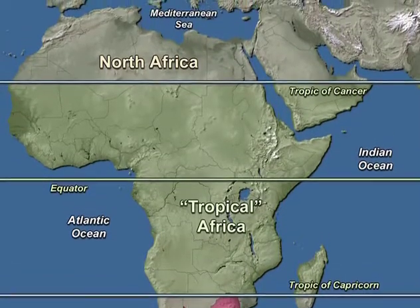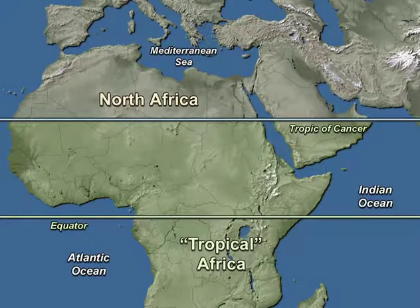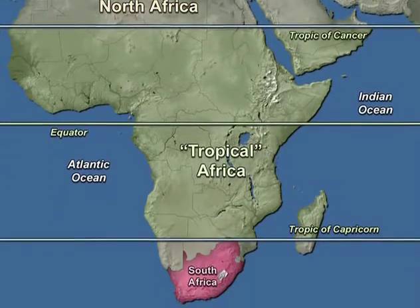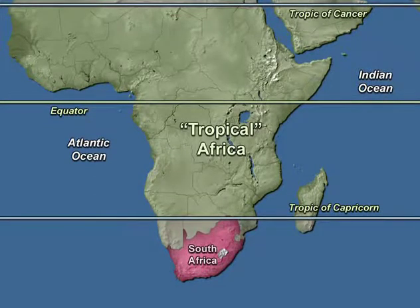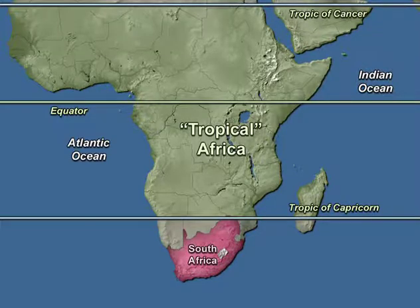In North Africa, most of the Mediterranean coast lies north of the Tropic of Cancer. In South Africa — one of our key countries — the Republic of South Africa lies almost entirely south of the Tropic of Capricorn, in the temperate zone of the southern hemisphere. If you go to South Africa in the southern hemisphere's winter — June or July — you'd best take some warm clothes, or purchase them from the many women you'll see knitting heavy wool sweaters on the street corners of Johannesburg, Durban, and Harare.